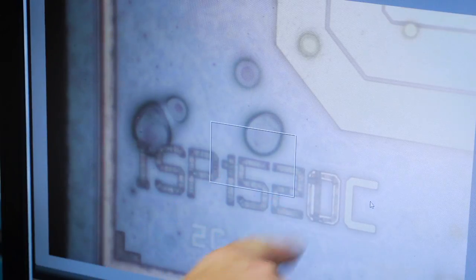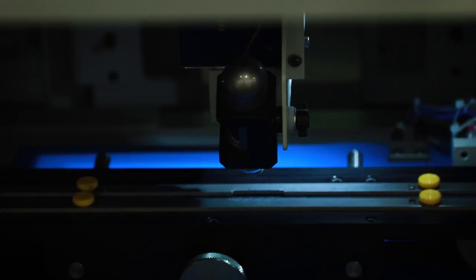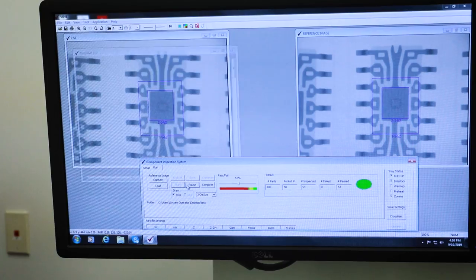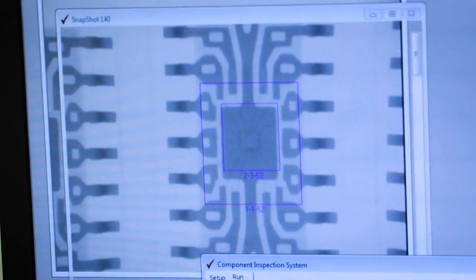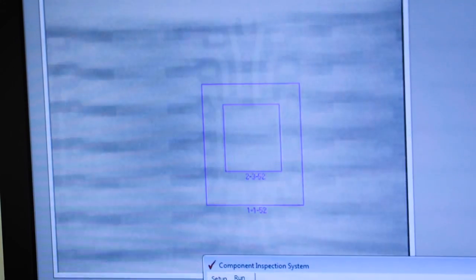They're not necessarily counterfeit, but they are not going into the supply chain. So this is a fancy X-ray machine. It has software that looks for anomalies as it runs, and it will do them frame by frame.